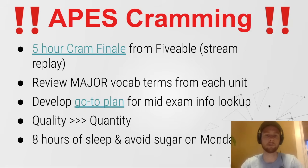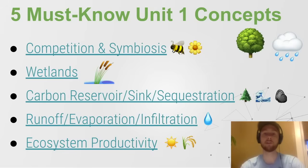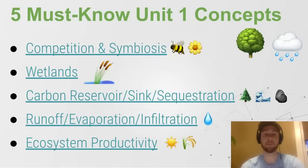Here are five must-know concepts from Unit 1. Competition and symbiosis — these are ways that organisms interact. Remember that competition is organisms basically fighting for a resource that they need. Symbiosis is just anytime organisms live in really close proximity. It could be beneficial for both — that would be mutualism. A honeybee and a flower is a great example of that.